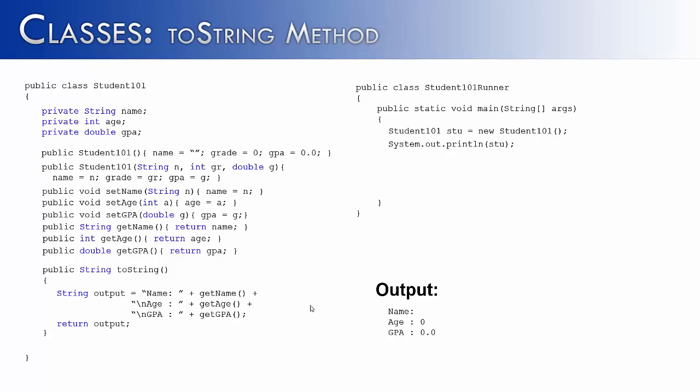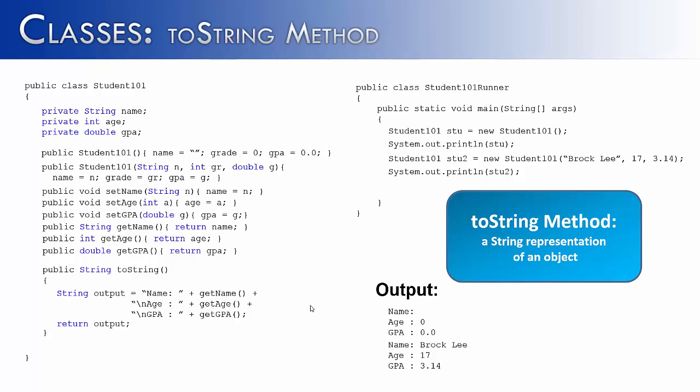And as I said earlier, the toString is going to be the template for all objects that are printed of a particular method. So let's say that we constructed another object of the Student101 class, and we used the second constructor. So the student's name is going to be Broccoli, age 17, and GPA 3.14. And so when we print him out, it would look like name Broccoli, age 17, GPA 3.14. And so now we can really get at what is the purpose of the toString method? It is a string representation of an object. When you're creating the toString method, you want to ask yourself, what do I want an object of this particular class to look like? And that's exactly what the toString method provides.